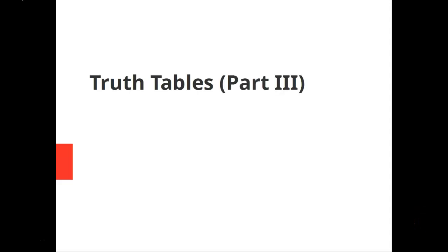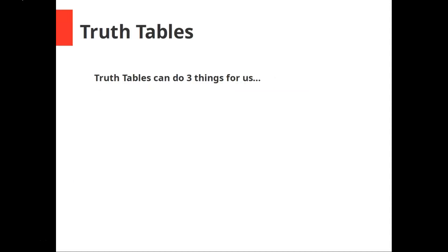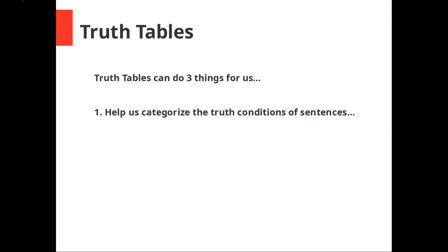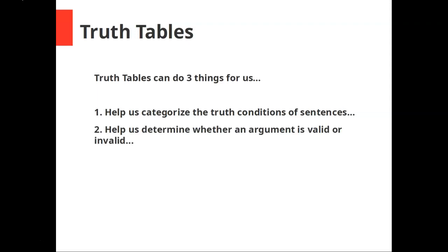This video is on truth tables. It is part three of a three-part series, and we've already seen truth tables can do three things for us: they can help us categorize the truth conditions of sentences, help us determine whether an argument is valid or invalid, and finally in this video help us compare the truth conditions for two sentences.